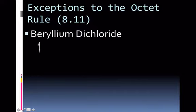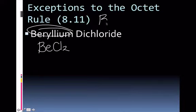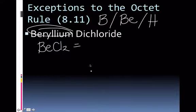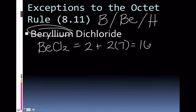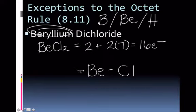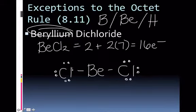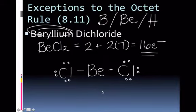Beryllium dichloride is BeCl₂. Watch out right away — beryllium is one of the exceptions. Beryllium is in column 2A with 2 valence electrons, plus 2 chlorines each having 7, so 2 + 14 = 16. Put beryllium in the middle, attach a chlorine to each side, and give everyone 8 who needs it — which is not beryllium. Counting gives 16, exactly what we needed. Be careful with beryllium and boron: don't put lone pairs around them; just bond them to what the formula says.